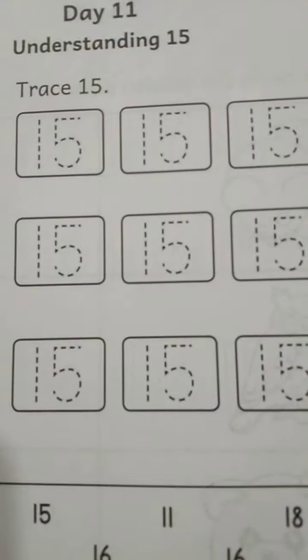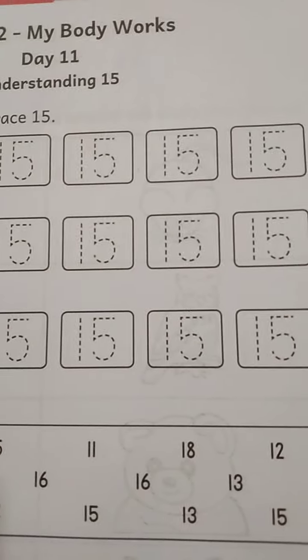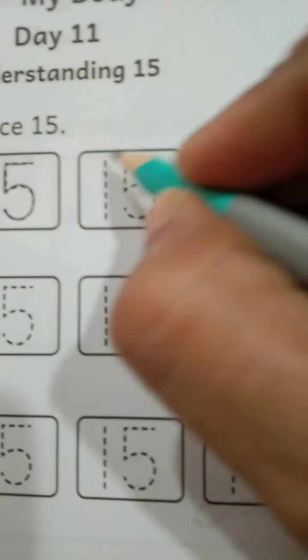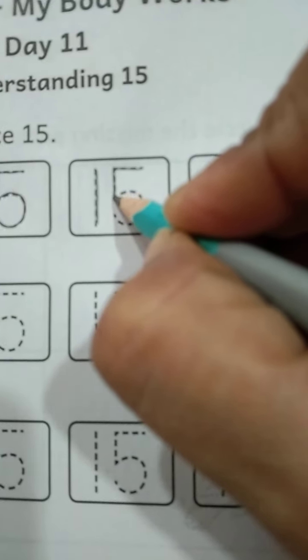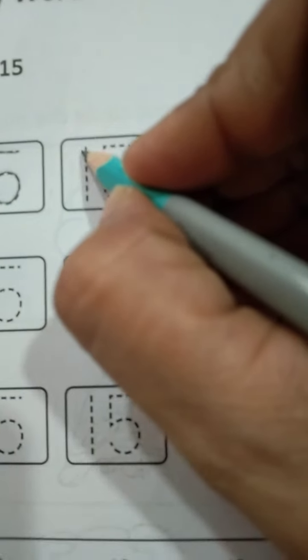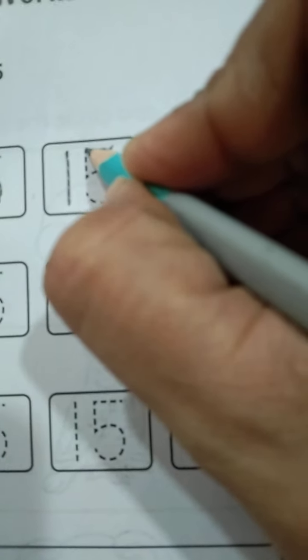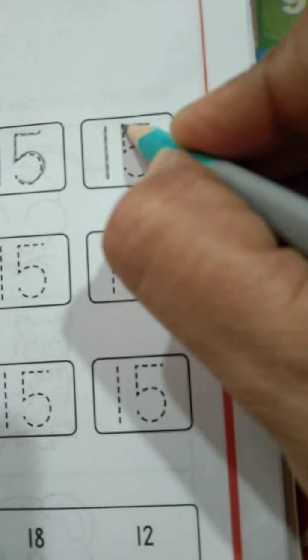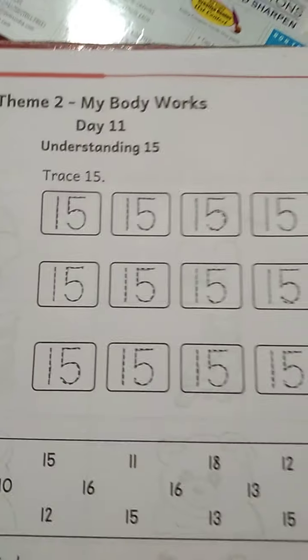So here we have some tracing patterns. We will trace number 15. Let's start from the top. Slowly trace and come down with a vertical line. Now, small horizontal line, small vertical line, and a curve and turn. This is 15. Speak and write 15. It's very important to speak while writing. Likewise, we will trace these lines. Tracing is done.